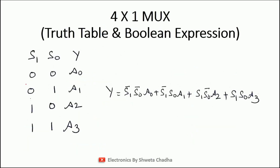Next is the truth table. With two select lines, four combinations are written: 0,0 output is A0; 0,1 output is A1; 1,0 output is A2; 1,1 output is A3. Only one Boolean expression is written because there is only one output signal. The Boolean expression is: Y = S1 bar·S0 bar·A0 + S1 bar·S0·A1 + S1·S0 bar·A2 + S1·S0·A3. You can verify by comparing with the truth table — it becomes very easy to write the Boolean expression just by looking at the truth table.